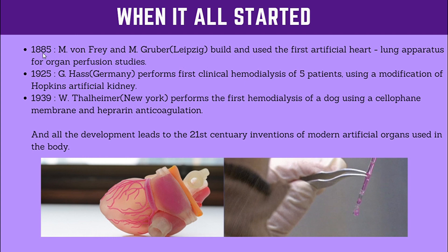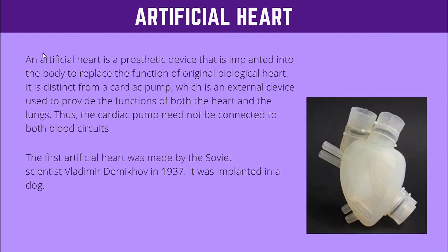All these developments have led to advances in the 21st century. Let's look at the artificial heart. An artificial heart is a prosthetic device that is implanted into the body to replace the function of the original biological heart. It is distinct from a cardiac pump, which is an external device used to provide the functions of both the heart and the lungs. Thus, the cardiac pump needs to be connected to both blood circuits.